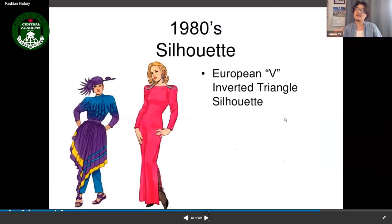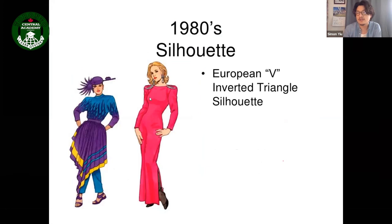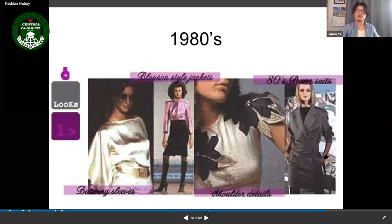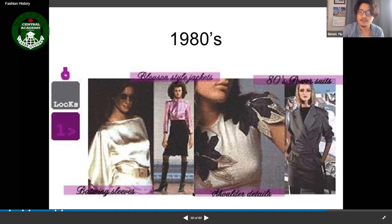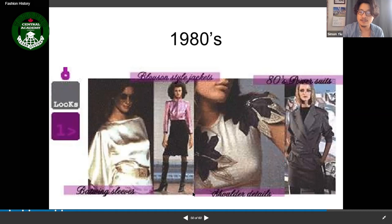The 1980s silhouette was a European V-shape inverted triangle — broad shoulders tapering down. Clothing included power suits, shiny and reflective materials like satin and silk.